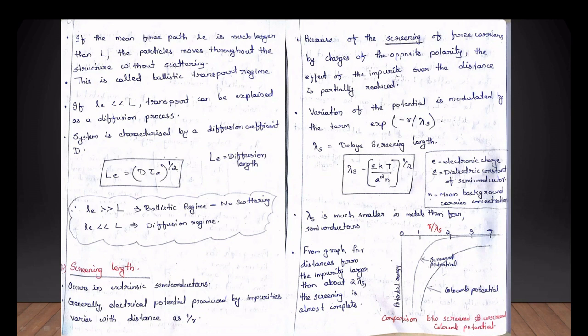The variation of potential with distance will represent an exponential term. The exponential term is e raised to minus r by lambda.